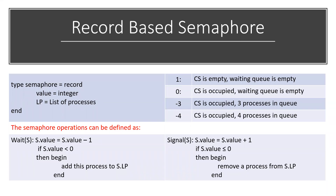Hi everyone, hope everything is fine. In our last tutorial we were discussing semaphores. A semaphore is a tool that helps us to synchronize processes — that is, it helps in process synchronization. A semaphore is a variable in shared memory, meaning it is memory used by more than one process — two or more.